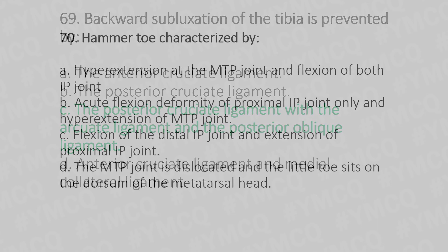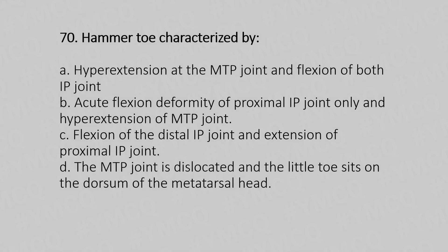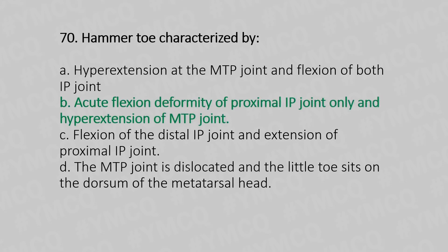Now let's move to quiz number 70. Hammer toe characterized by: Option A, Hyperextension of the MTP joint and flexion of both IP joints; Option B, Acute flexion deformity of proximal IP joint only and hyperextension of MTP joint; Option C, Flexion of distal IP joint and extension of proximal IP joint; Option D, The MTP joint is dislocated and the little toe sits on the dorsum of the metatarsal head. And the answer is Option B, Acute flexion deformity of proximal IP joint only and hyperextension of the MTP joint.